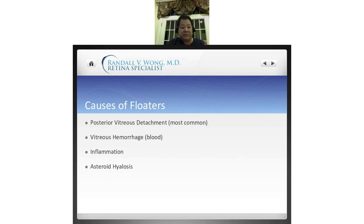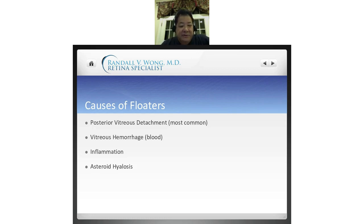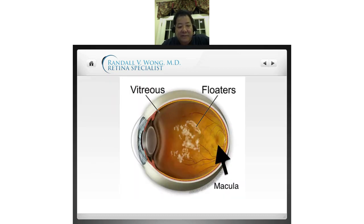Having said that, I'd like to go over what we call the differential in medicine — the different causes of floaters. The most common is posterior vitreous detachment. Second is probably blood in the middle of the eye, or a vitreous hemorrhage. Inflammation can cause floaters, as can a benign condition called asteroid hyalosis. We're talking about anything suspended within the vitreous, which is why you get the characteristic moving to and fro when you move your eyes.